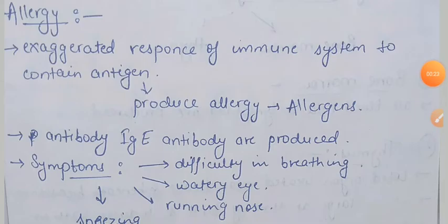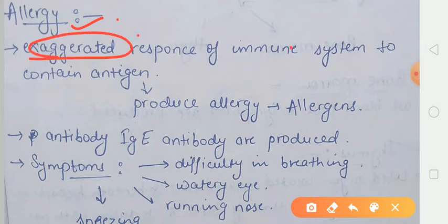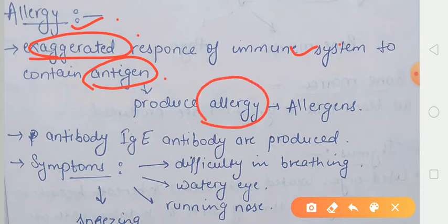In the previous session we discussed about allergy. Toh kya hooti hai allergy? It is an exaggerated response of our immune system, jab bhi koi antigen humari body ke andar enter karta hai. Jo antigen humhen allergy produce karta hai, usko hum kya bolte hai? Allergens — yiani ki allergy causing substances ko hum allergens bolte hai.